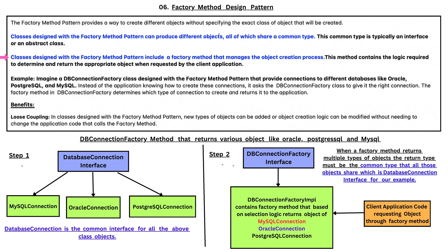Classes designed with the Factory Method Pattern include a Factory Method that manages the object creation process. This method contains the logic required to determine and return the appropriate object when requested by the client application. For example, imagine a DBConnectionFactory class designed with the Factory Method Pattern that provides connections to different databases like Oracle, PostgreSQL, and MySQL. Instead of the application knowing how to create these connections, it asks the DBConnectionFactory to give it the right connection.